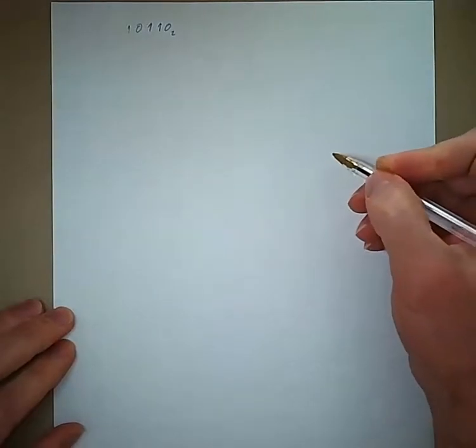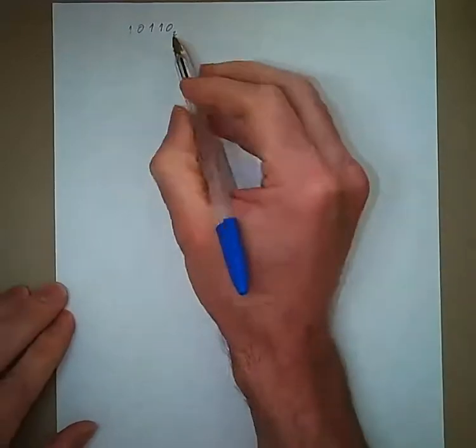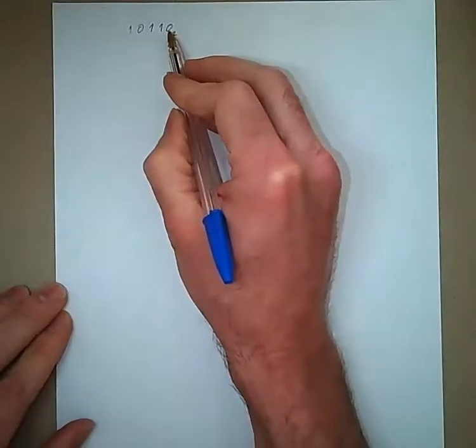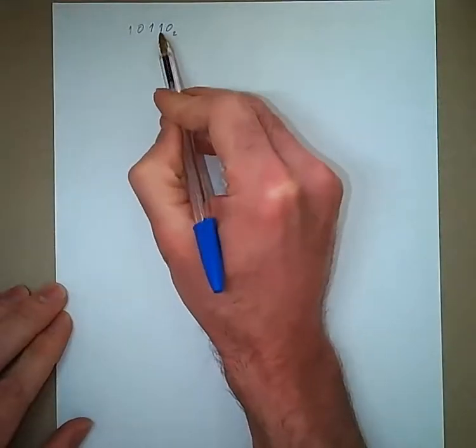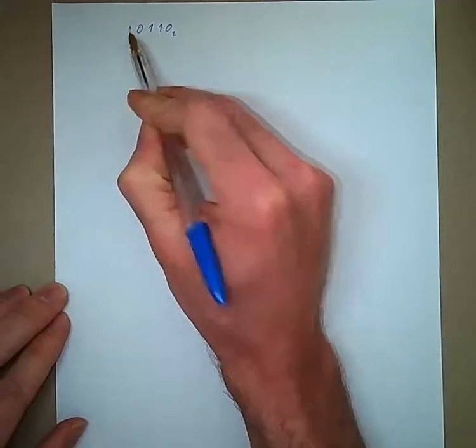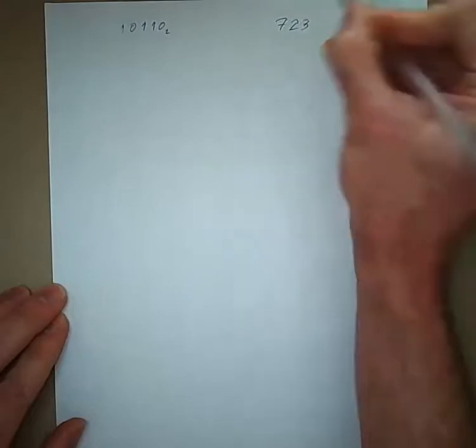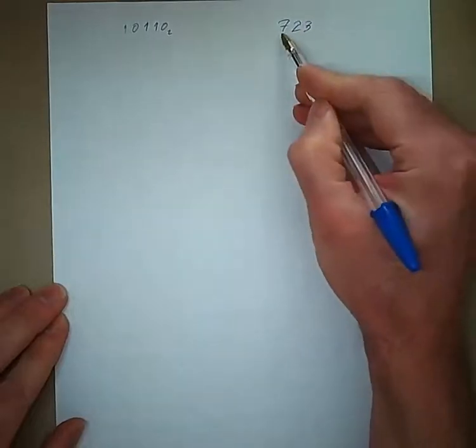That is made up of 5 bits, and the way that you can look at this is, this is the 1's place, the 2's place, the 4's place, the 8's place, the 16's place. Just like a number in decimal, 723, this is the 1's, that's the 10's, that's the 100's place.